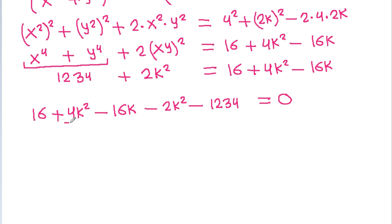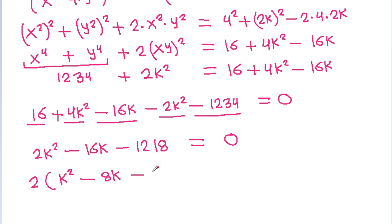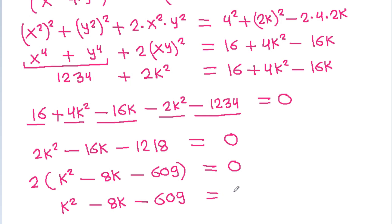And x squared plus 4k squared minus 2k squared minus 16k, setting x to the 4th plus y to the 4th equal to 234, we get 2k squared minus 16k plus 16 minus 234 equals 0, which simplifies to 2 times (k squared minus 8k minus 109) equals 0. So k squared minus 8k minus 609 equals 0.